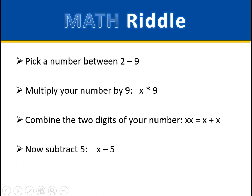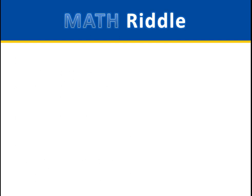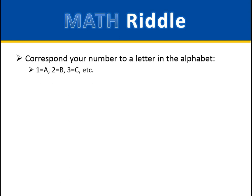Now subtract 5 from that number. Now take that number and correspond it to a letter in the alphabet. For example, 1 would equal A, 2 would equal B, 3 would equal C, etc.